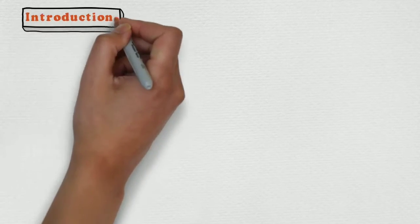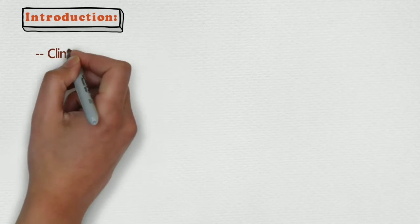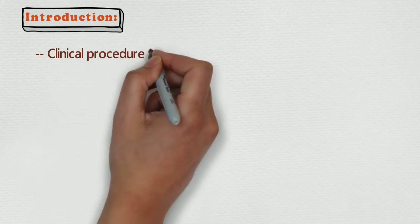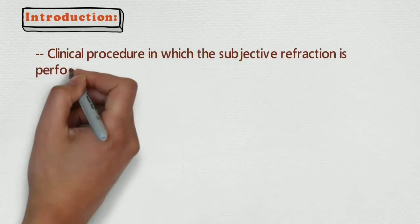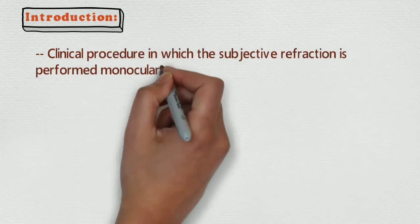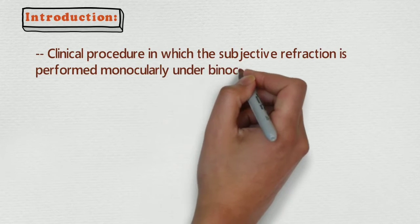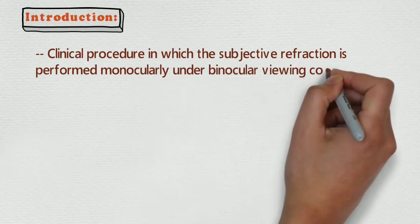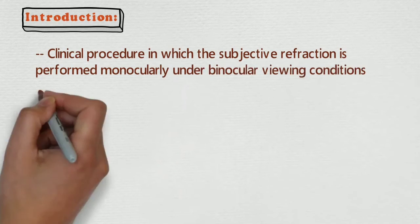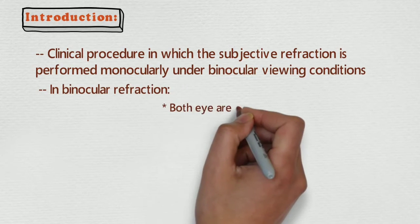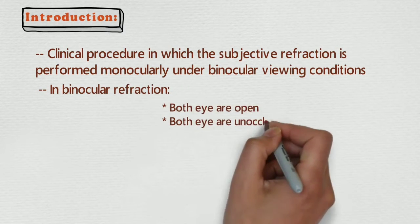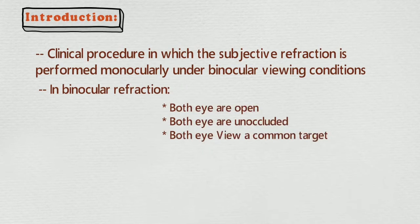Introduction of binocular refraction. Binocular refraction is a clinical procedure in which the subjective refraction is performed monocularly under binocular viewing conditions. In binocular refraction, both eyes are open, both eyes are unoccluded, and both eyes view a common target.